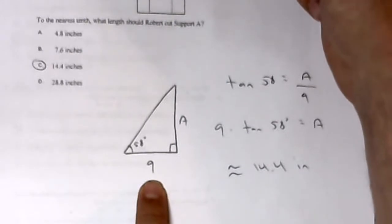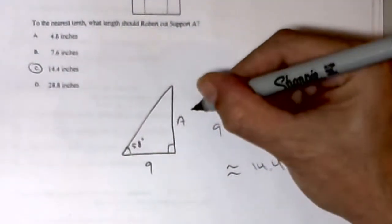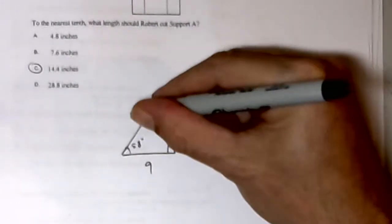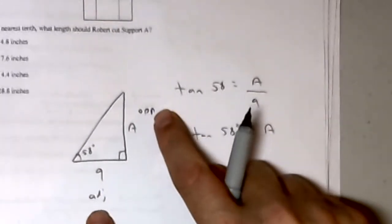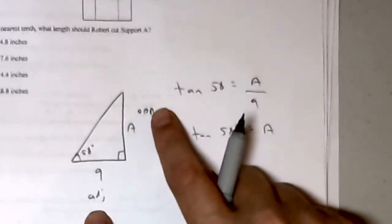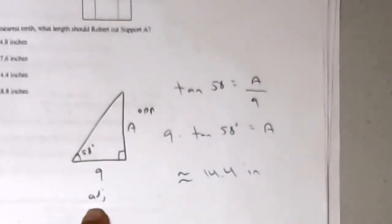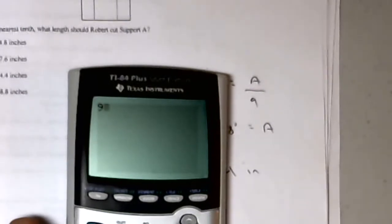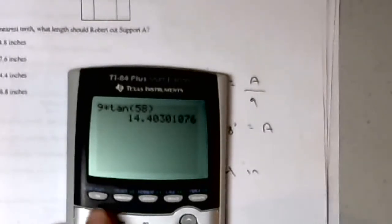This is my opposite, there's the hypotenuse, this is the adjacent. I have the opposite and the adjacent, so I'll use tangent. Tangent 58 equals A over 9. Multiply both sides by 9: 9 times tangent 58 degrees. That gives me 14.4 inches.